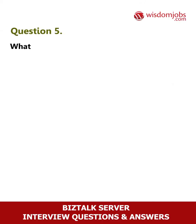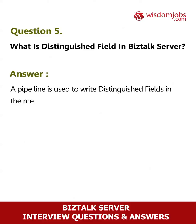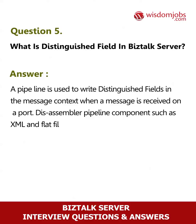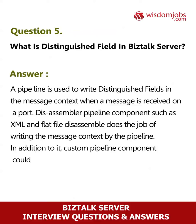Question 5: What is a distinguished field in BizTalk Server? Answer: A pipeline is used to write distinguished fields in the message context when a message is received on a port. The disassembler pipeline component, such as XML and flat file disassembler, does the job of writing to the message context. In addition, a custom pipeline component could also perform this.